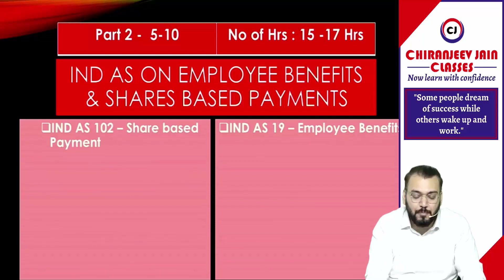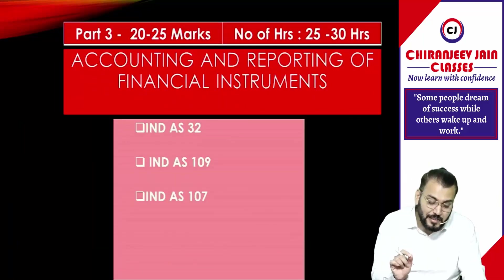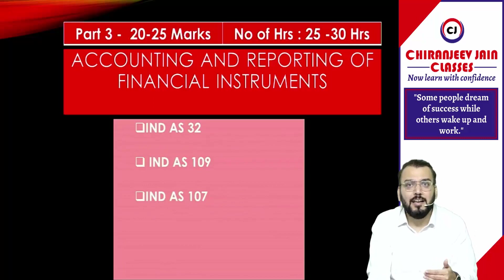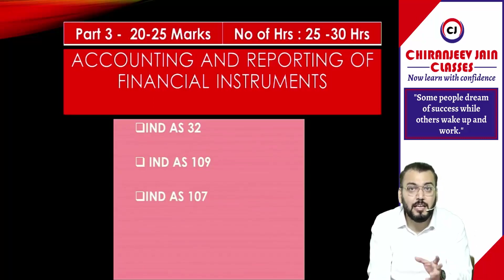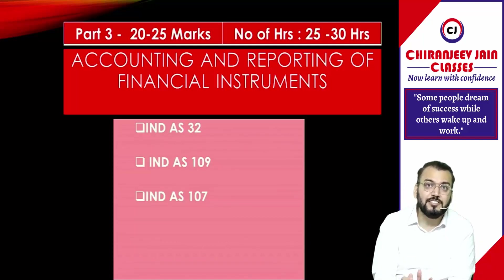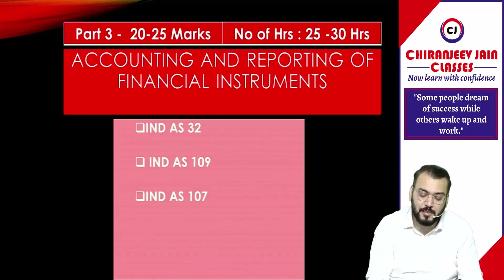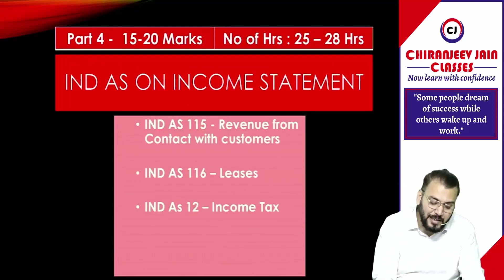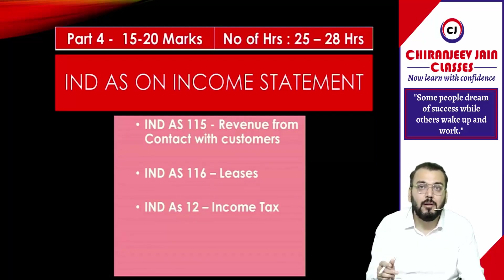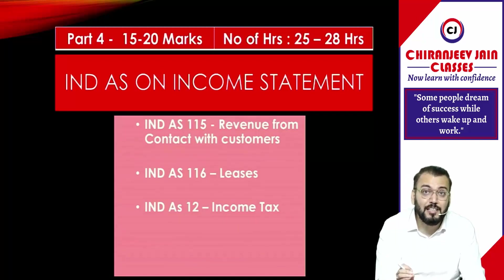After completion of Part 2, move to the Financial Instruments chapter — Part 3, the most important chapter. The weightage of this chapter is 25 marks, and I have allocated 25 to 30 hours for the Financial Instruments chapter. Once you have covered Financial Instruments, move to Part 4, which consists of Ind AS related to the income statement: Ind AS 115 (Revenue), Ind AS 116 (Leases), and Ind AS 12 (Income Tax). The weightage from these chapters is 15 to 20 marks, and I have allocated 25 to 28 hours for these particular chapters.